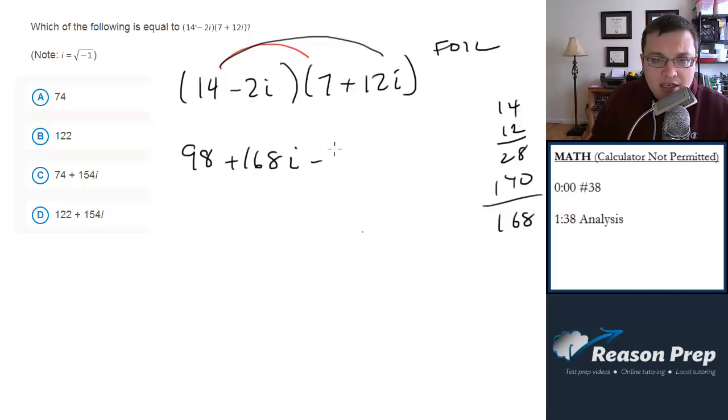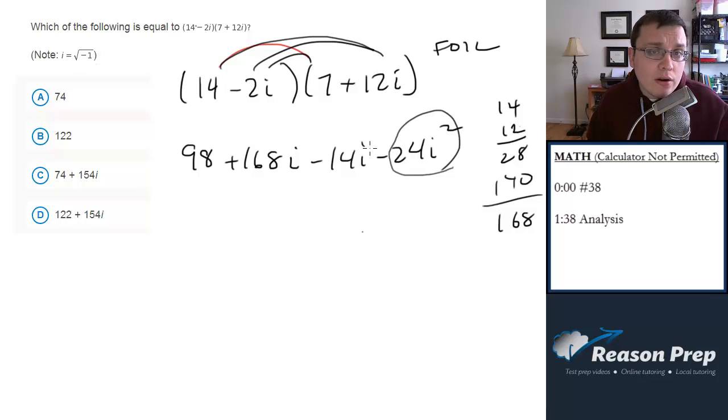And then minus 14i when we do the insides. And then minus 24i squared. Now this 24i squared, i squared, since i is the square root of negative 1, i squared is just going to be negative 1. So this becomes negative 1. Which means negative 24 times negative 1 gives me plus 24. So let me rewrite all of this.